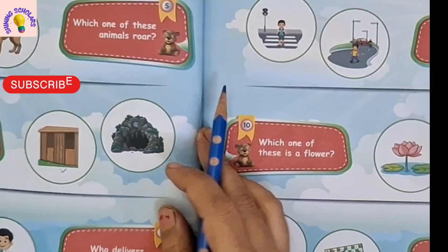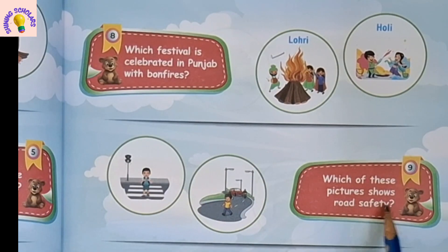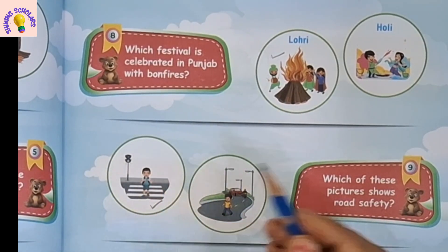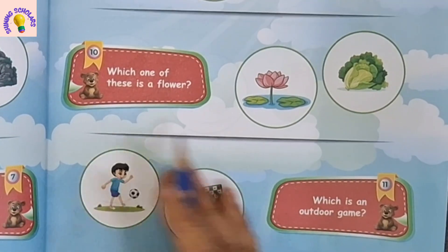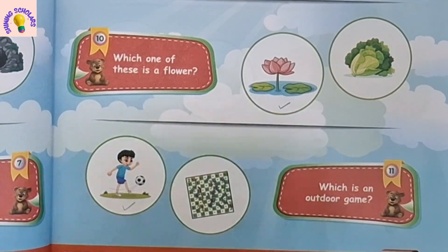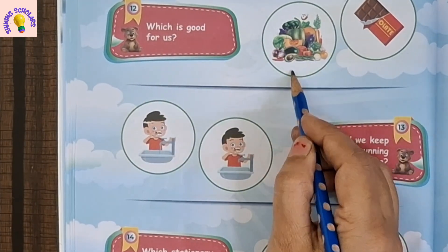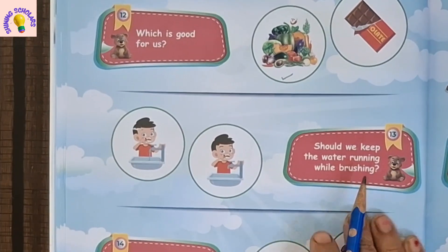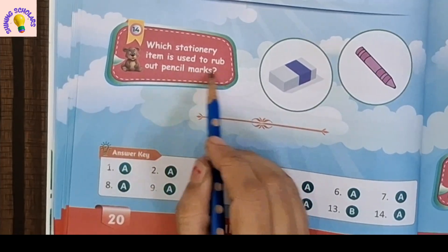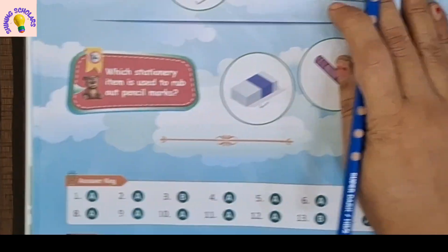Which festival is celebrated in Punjab with bonfires? This is Lohri. Which of these pictures shows road safety? This one — the boy is walking on the zebra crossing. Which one of these is a flower? Lotus is a flower. Which is an outdoor game? Football is an outdoor game. Which is good for us — fruits and vegetables or chocolate? Fruits and vegetables. Should we keep the water running while brushing? No, we should keep the tap off. Which stationery item is used to rub out pencil marks? This is an eraser. You can match your answers at the end.